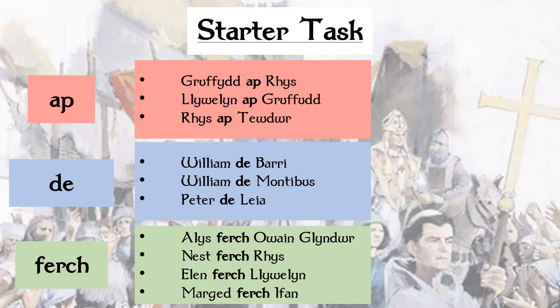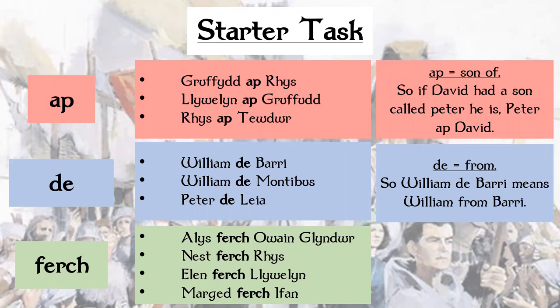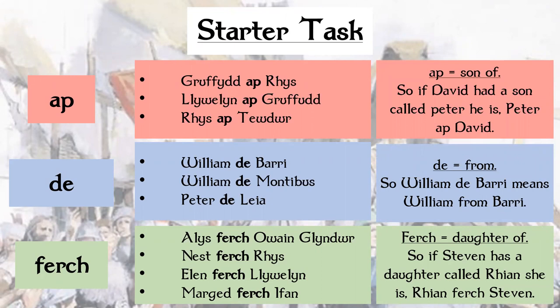Now you've done that, we'll go through them. Ap means son of — so if David had a son called Peter, he is then known as Peter Ap David. De means from — so in the example, William De Barry means William from Barry. And then Ferch means daughter of — so if Stephen has a daughter called Rhian, her name would be Rhian Ferch Stephen. Notice that it's always the father's name that follows; they don't use the mother's name.